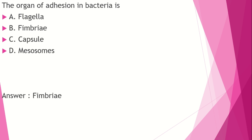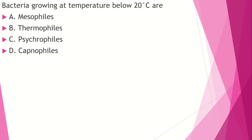Bacteria growing at temperature below 20 degrees Celsius are: Option A mesophiles, Option B thermophiles, Option C psychrophiles, Option D capnophiles. The answer is psychrophiles — they grow below 20 degrees. Mesophiles grow at human body temperature. Thermophiles grow at high temperatures, for example Bacillus. Capnophiles are carbon dioxide-loving bacteria, for example Haemophilus influenzae.